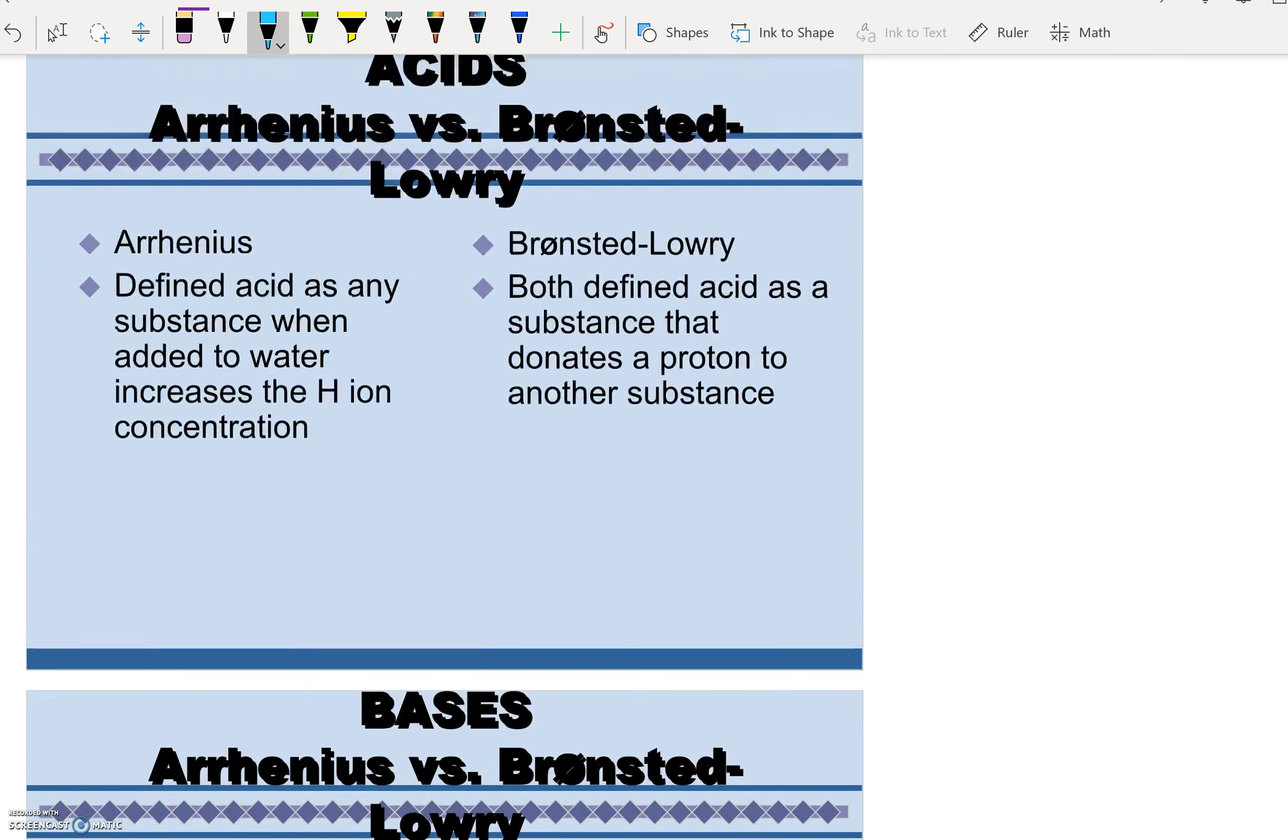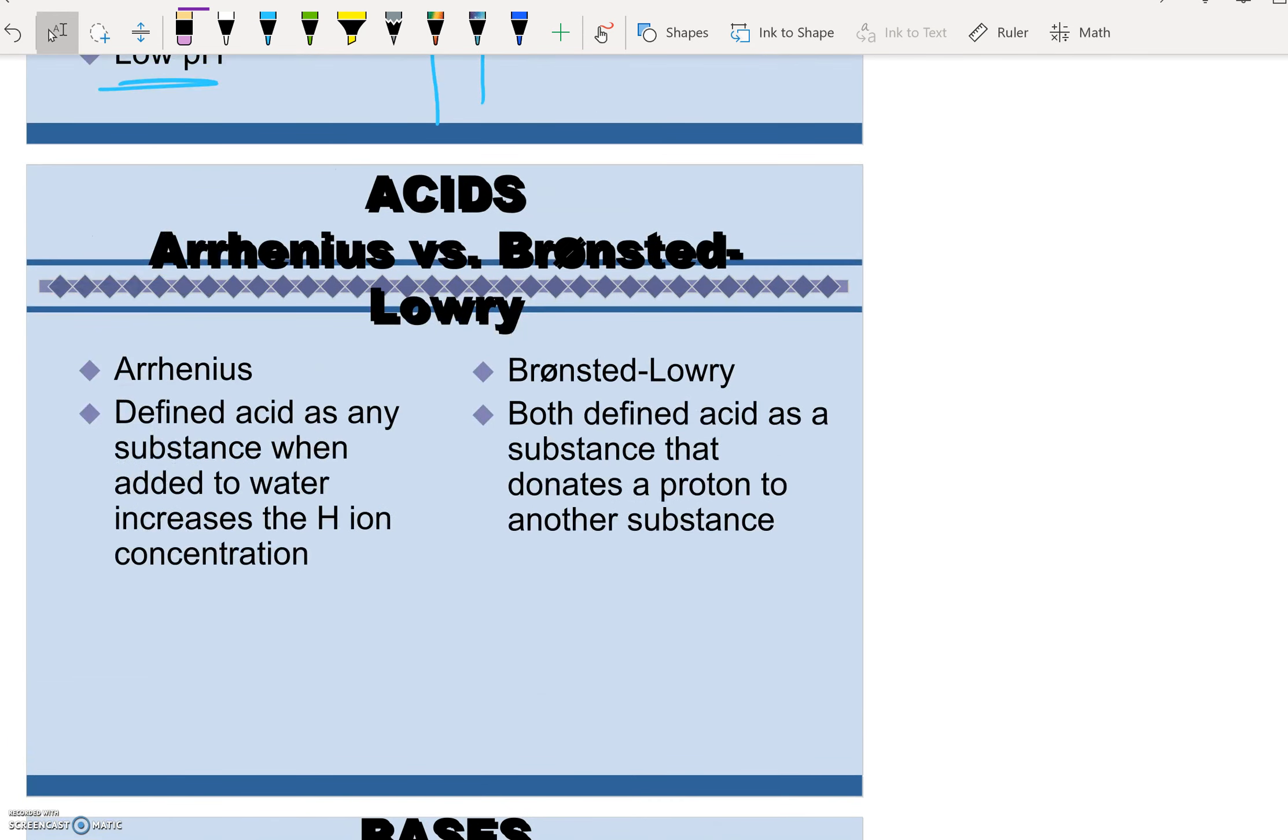So a couple of definitions. Arrhenius and Bronsted-Lowry are two different sets of scientists who studied acids and bases. So Arrhenius defined an acid as a substance that will increase the hydrogen ion concentration. This makes sense with our basic definition that we go over in Chem 1 where we talk about how acids have an H in front like HCl or HClO3.